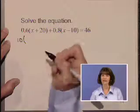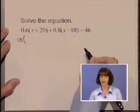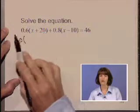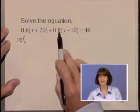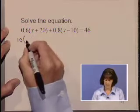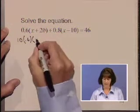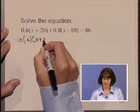10 times everything on the left. As we do that, we want to multiply 10 times this group of factors and 10 times this group as well. So 10 times 0.6 times the quantity x plus 20.